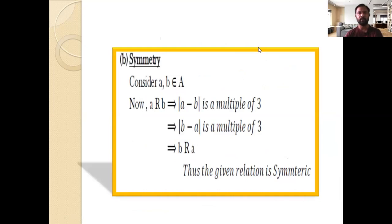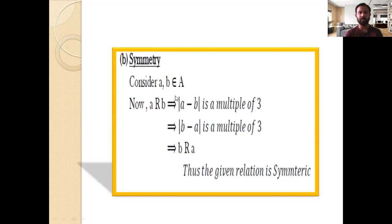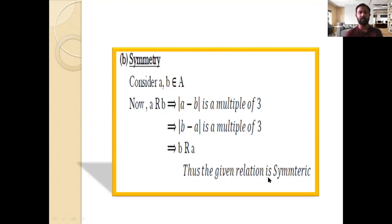Step 2: Show that the given relation R is symmetric. We start with a related to b and must end up at b related to a. Consider two elements a and b in set A. If a R b, then |a - b| is a multiple of 3. Since |a - b| = |b - a|, we get |b - a| is also a multiple of 3, which corresponds to b related to a. Thus the relation is symmetric.